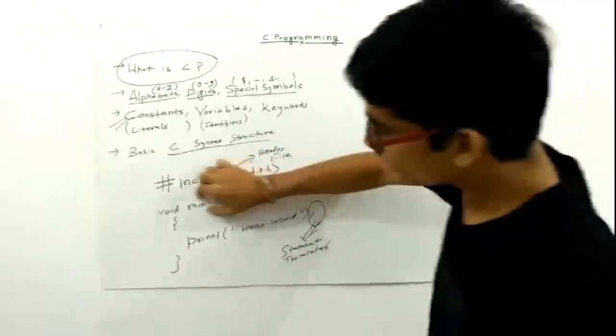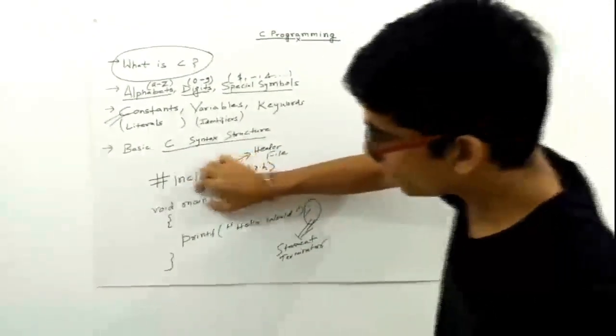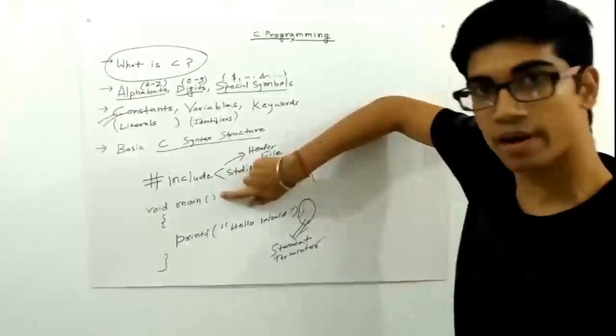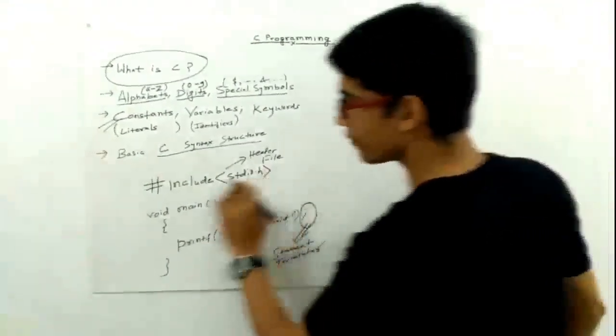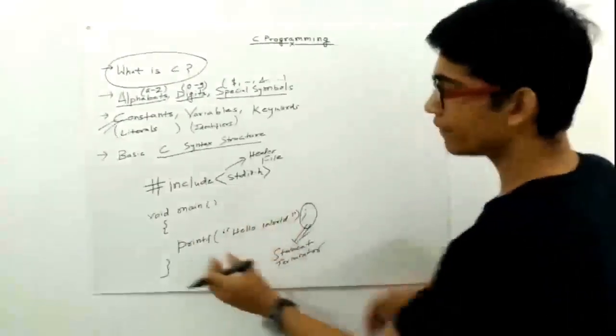So we know that this is a main function. We have to write this main function for every C program. This will enclose all our statements or instructions.